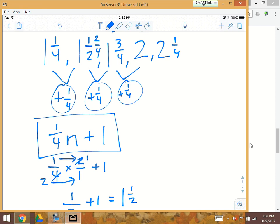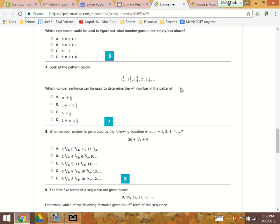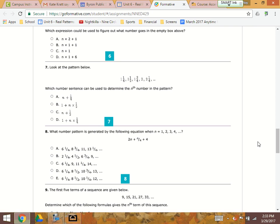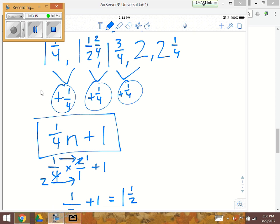So n plus 1/4? No, we don't have what we want. 1 plus n times 1/2? No, that's not what we said. n plus 1/2? No. 1 plus n times 1/4? Okay, we have 1 plus n times 1/4. That one does match what we have. It's in a different order but it's the same thing. D is going to be our correct choice.